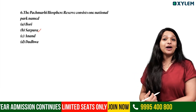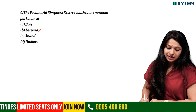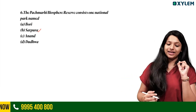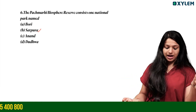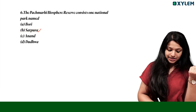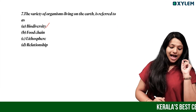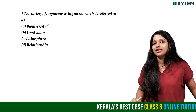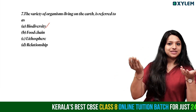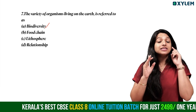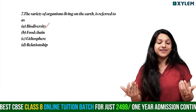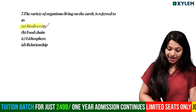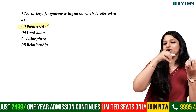Next question: The Pachmarhi biosphere reserve consists of which national park? The Pachmarhi biosphere reserve includes Bori and Satpura. The variety of organisms living on the earth is referred to as biodiversity.